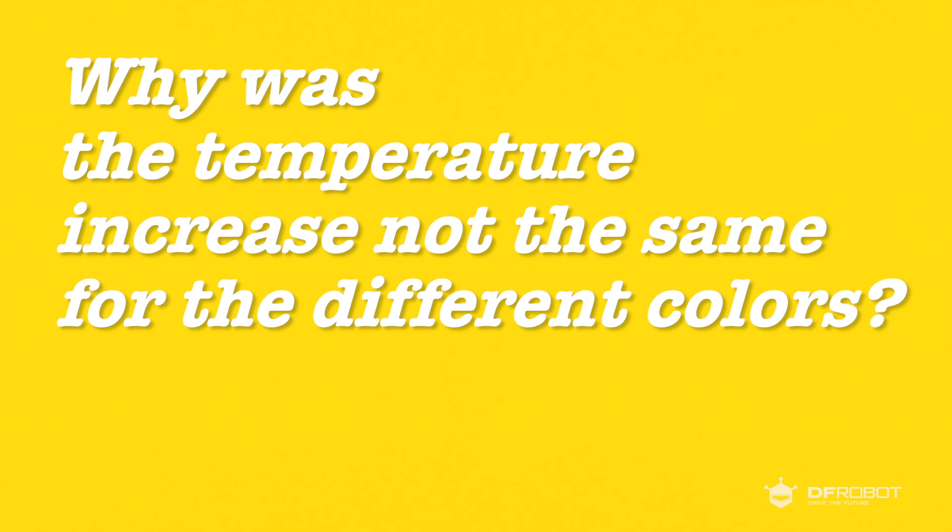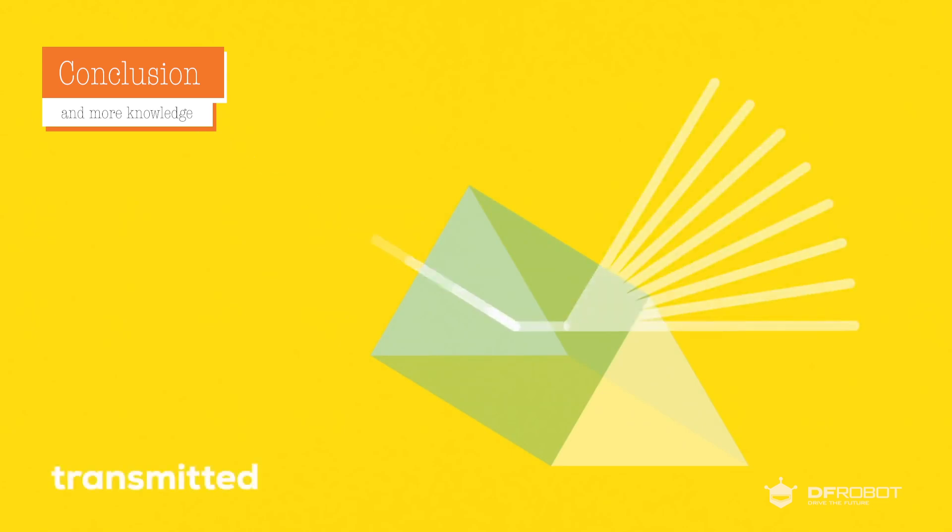But now we have a new question. Why was the temperature increase not the same for the different colors? The answer is, when light strikes an object, it can do one of three things. It can be transmitted through the object. It can be reflected by the object. Or, it can be absorbed by the object.